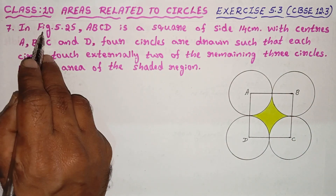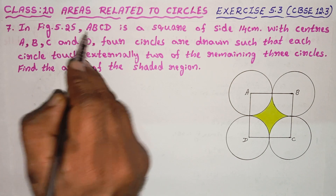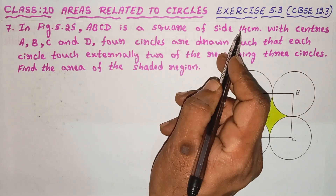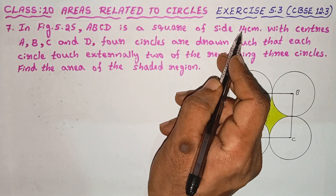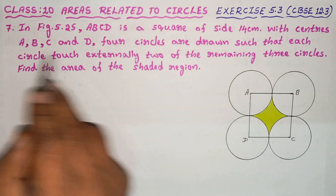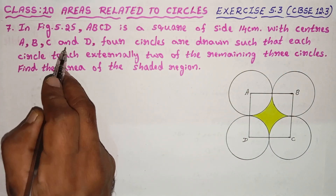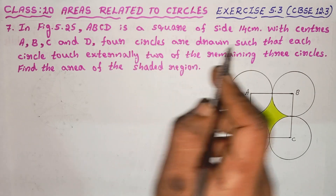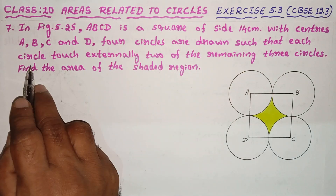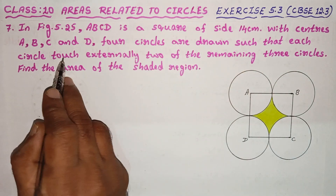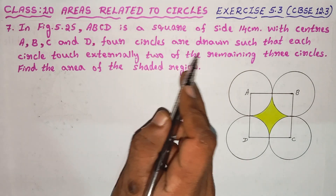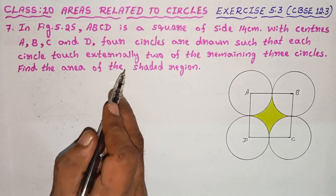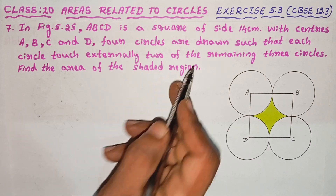In figure 5.25, ABCD is a square of side 14 cm. With centers A, B, C, and D, four circles are drawn such that each circle touches externally two of the remaining three circles. Find the area of the shaded region.